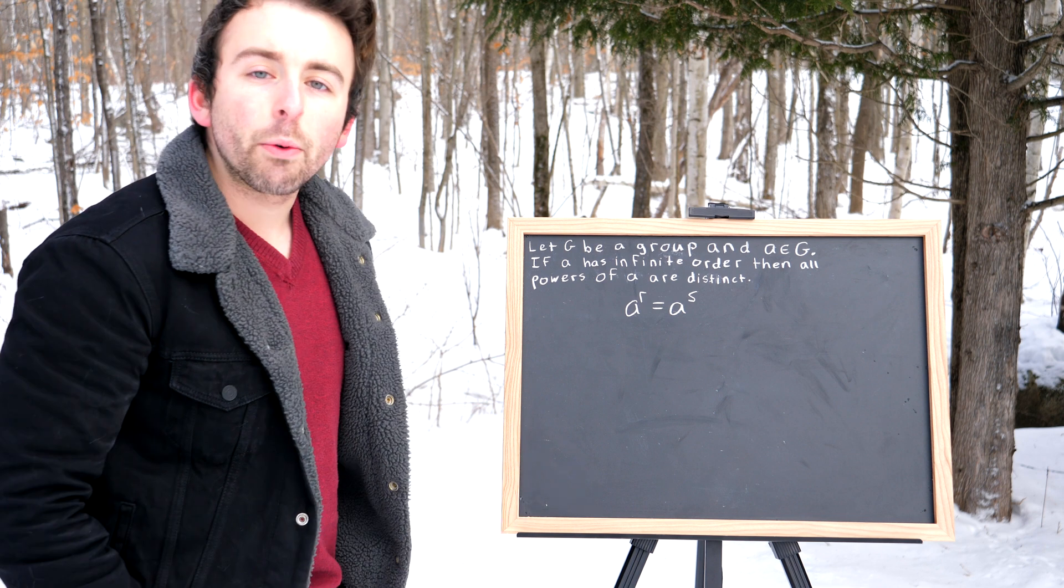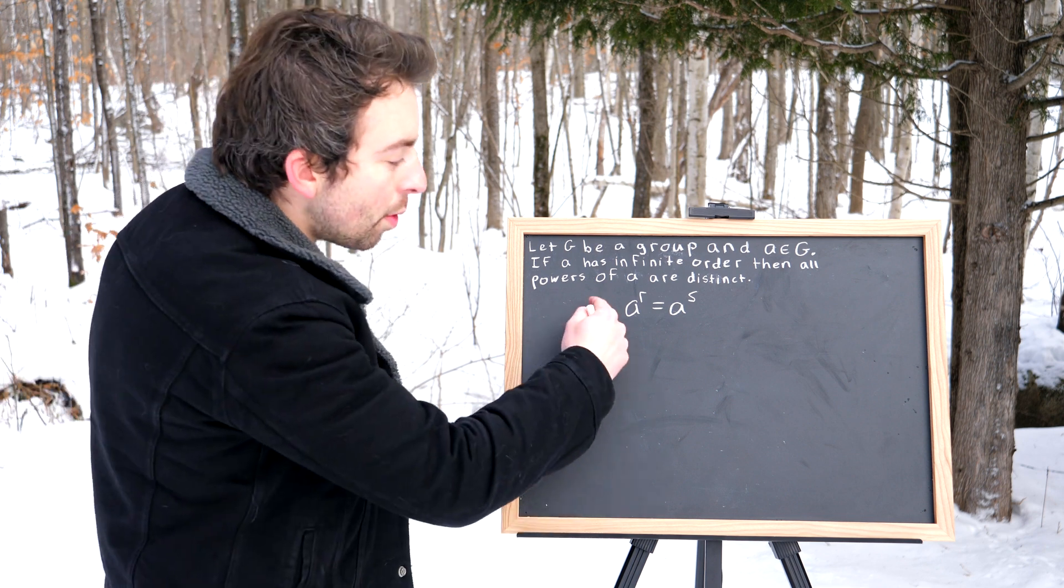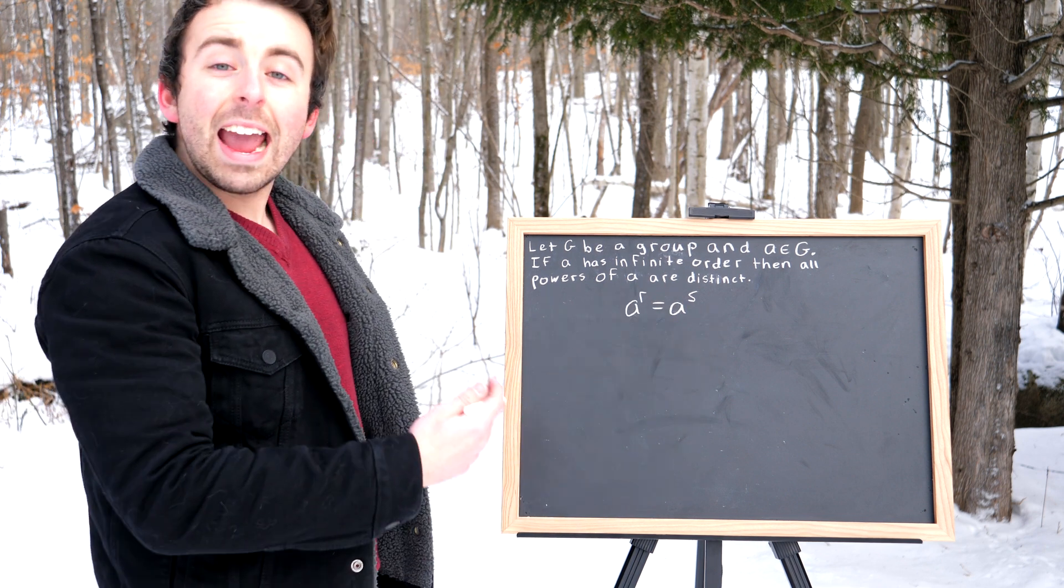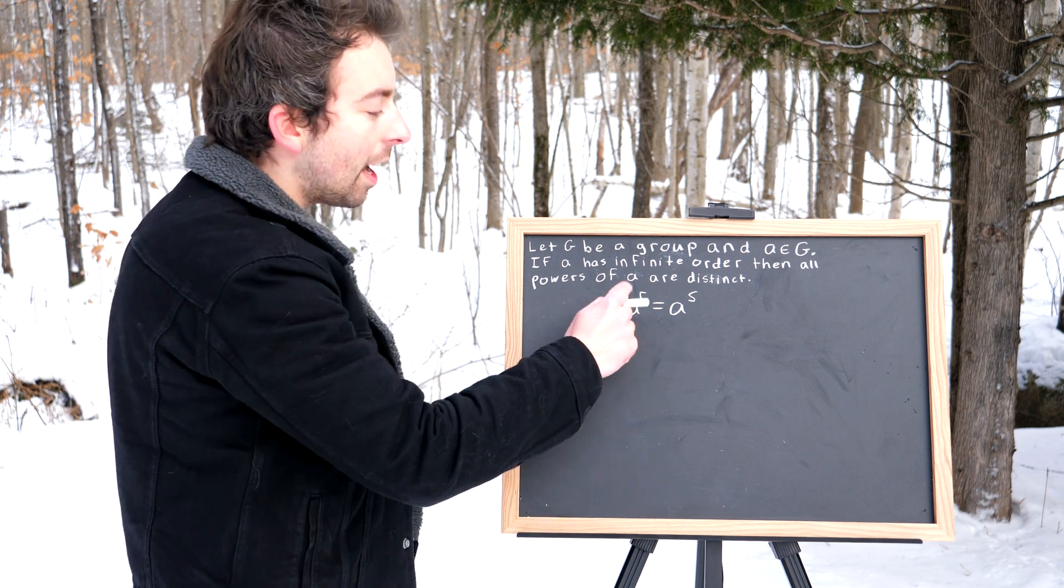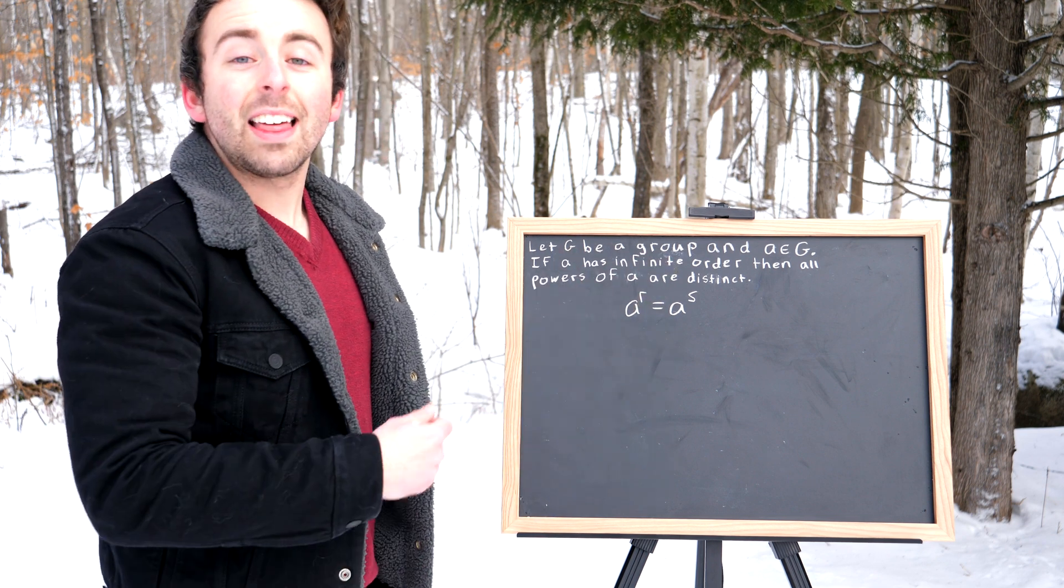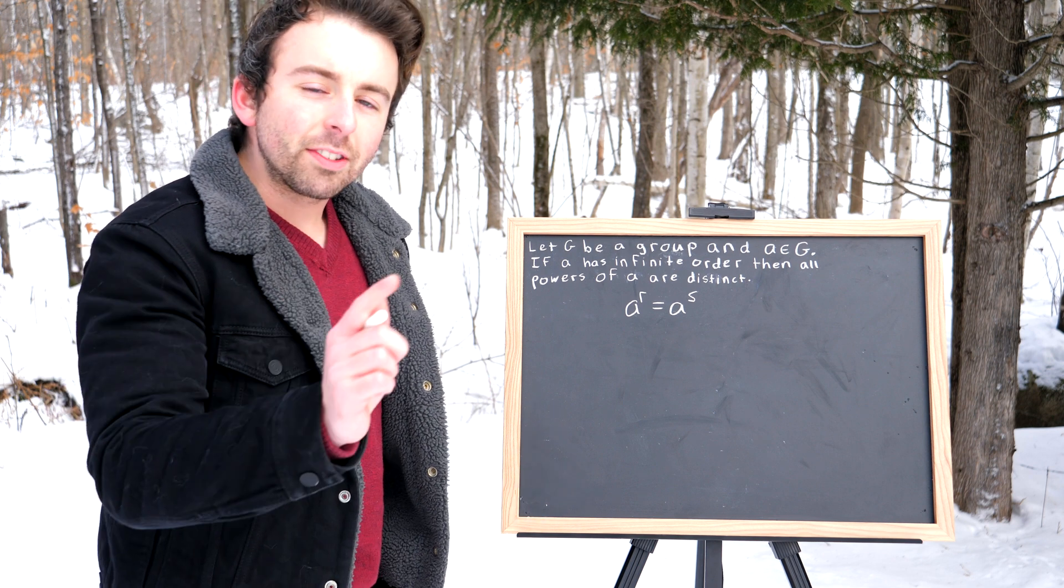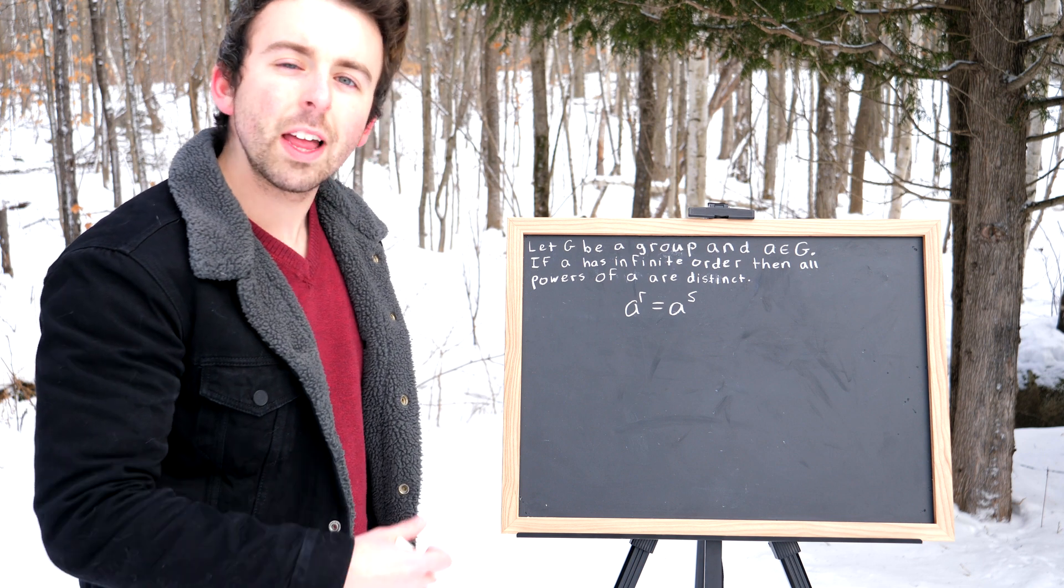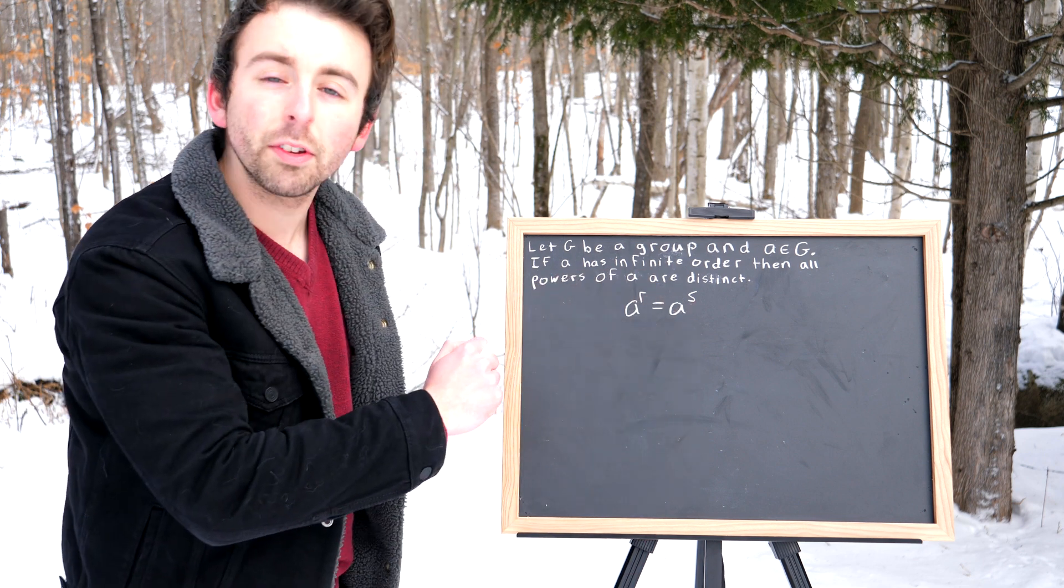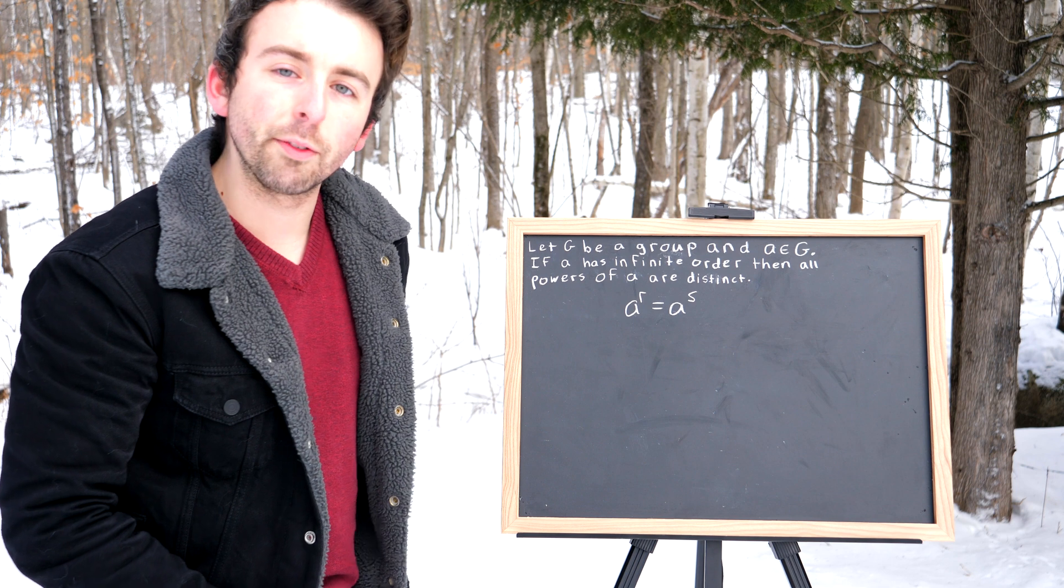Now we're claiming that all the powers of A are distinct. So if we have this equality, that A to the R equals A to the S, then it must follow that R equals S. That would prove our result. And that's precisely the strategy we'll use. So if we can show that these two powers of A being equal implies that the powers are equal, then our result will have been proven.